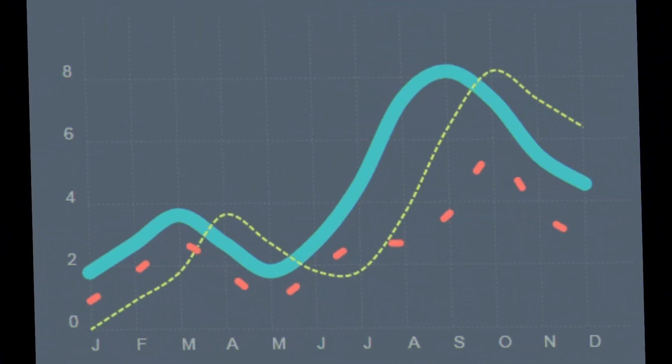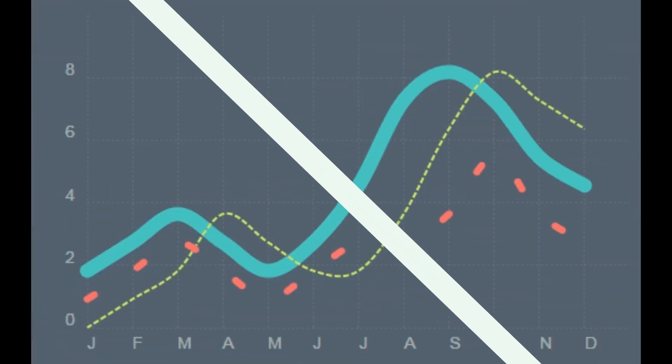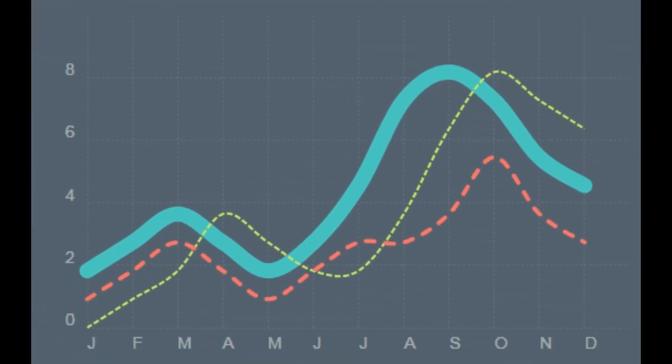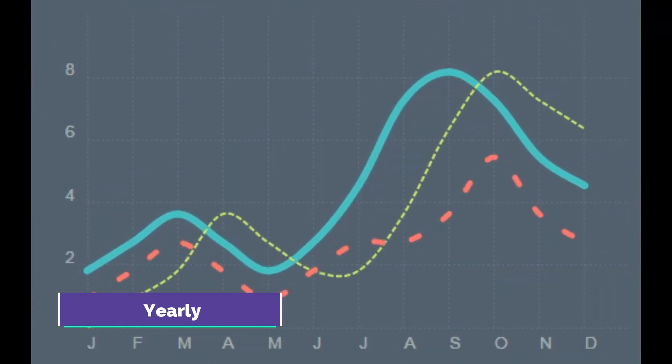The first step in time series analysis is to understand the nature of the data. Time series data consists of a sequence of data points that are recorded at regular intervals over time. The data can be daily, monthly, or yearly depending on the nature of the data.